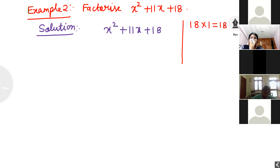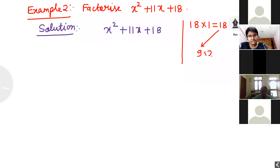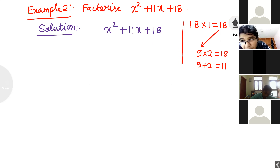I want to do the factors of 18 such that their addition will come to 11. Before the constant, the sign is positive. So 9 times 2 is 18, and 9 plus 2 is equal to 11. This method is also called splitting the middle term — we are splitting only 11x.